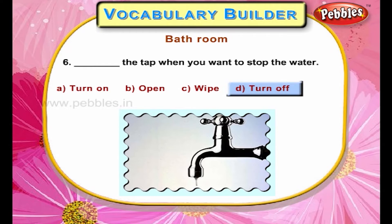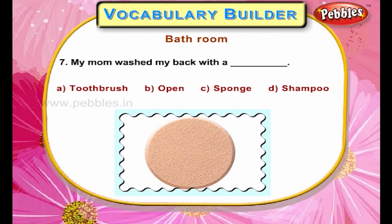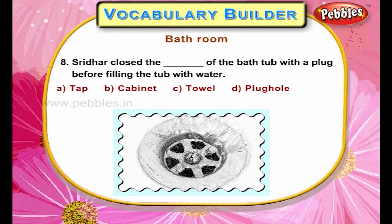Turn off the tap when you want to stop the water. My mom washed my bath with a sponge. Shredhar closed the plug hole of the bathtub with a plug before filling the tub with water.